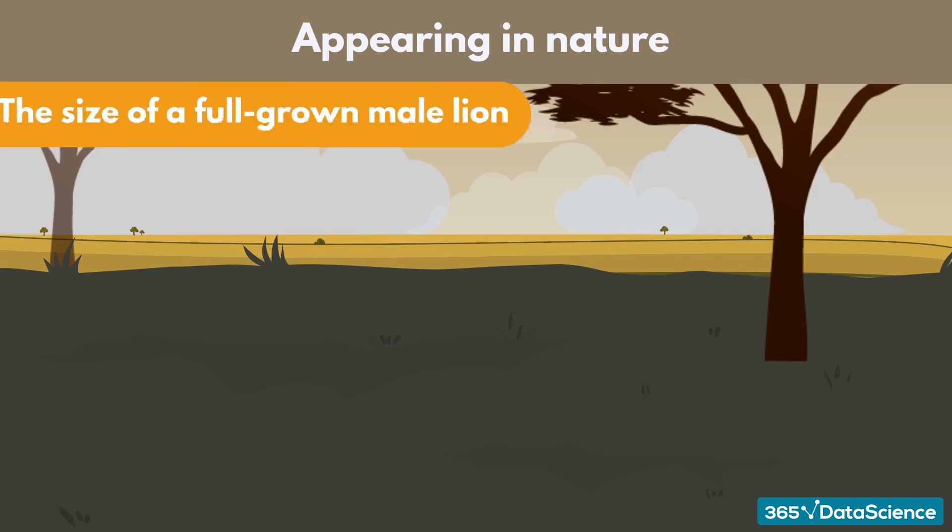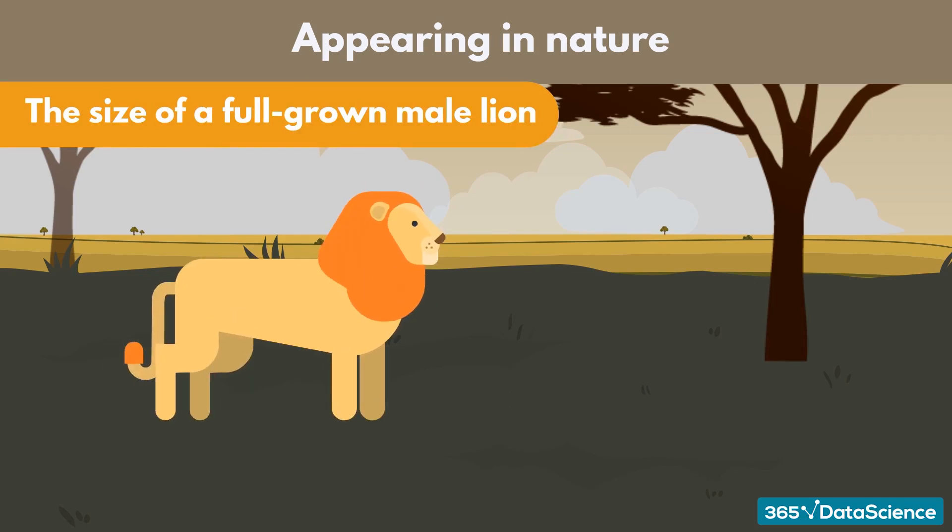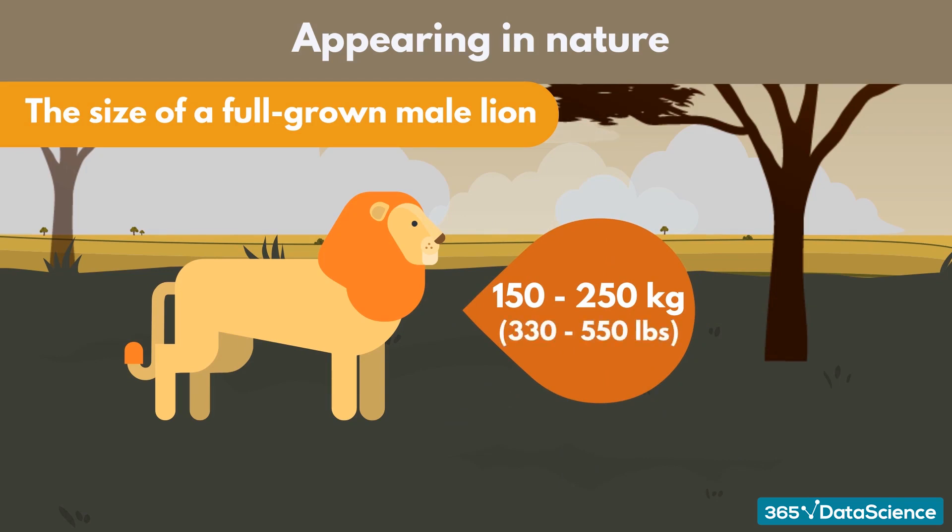For example, the size of a fully grown male lion follows a normal distribution. Many records suggest that the average lion weighs between 150 and 250 kilograms or 330 to 550 pounds.